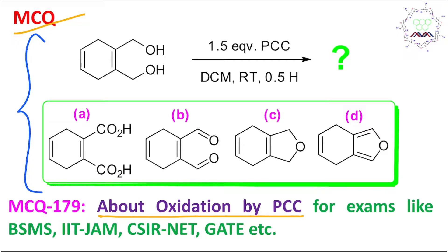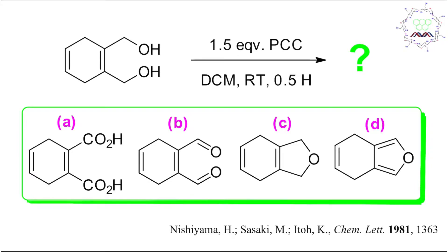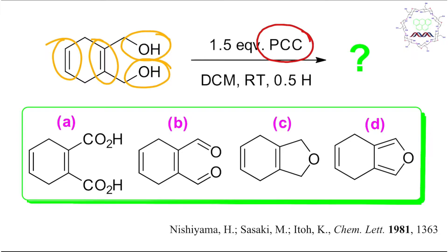I believe you have tried by yourself, so it's my turn to give you the right answer. As usual, I request you to focus on two parameters: what is the reactant and what is the chemical reactivity. If you look at the reactant, there is a hydroxyl group and two types of alkene groups. The reagent is PCC, which is an oxidizing agent, and oxidation is possible in the case of both alcohol and alkene.